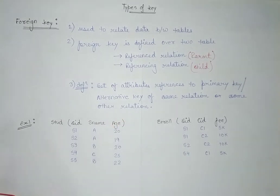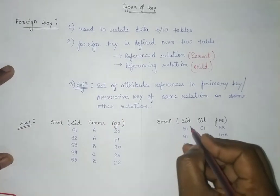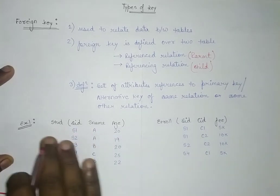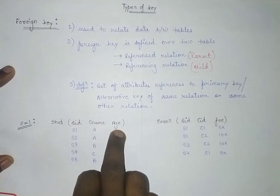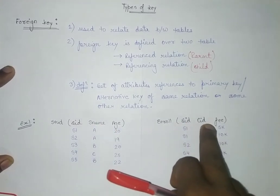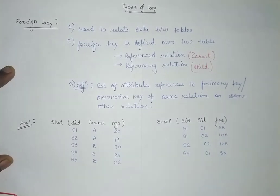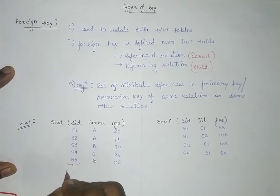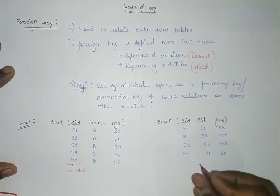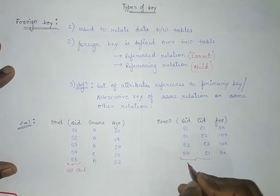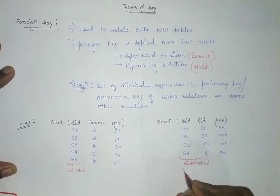For example, we are having two tables — Student and Enrolled. In the Student table, the attributes are student ID, student name, and age. In the Enrolled table, the attributes are student ID, course ID, and fee. This student ID in the Student table is the ID of all students.